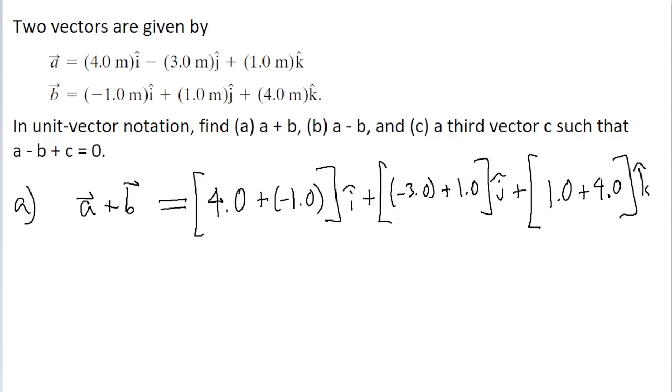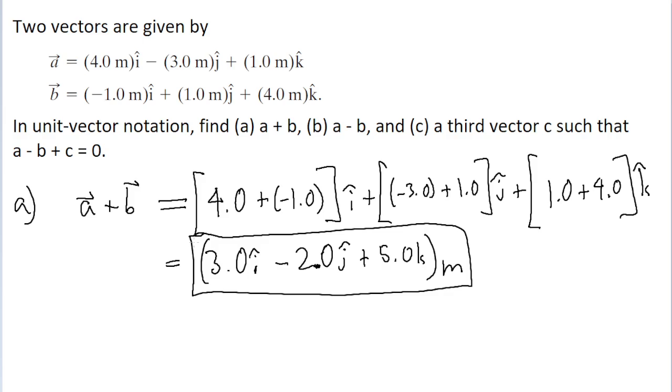We can only do arithmetic on the components individually. And what we find simplifying this down is that our i component is three. Four minus one is three. Then negative three plus one is negative two. So the j component is negative two. Then one plus four is five. So the k component is positive five. So this is our vector with units of meters. That is our answer to part a of the problem, where we're adding vectors a and b together.